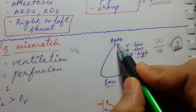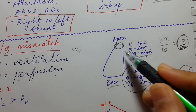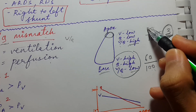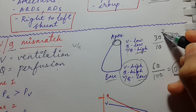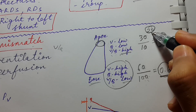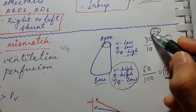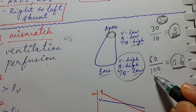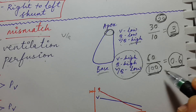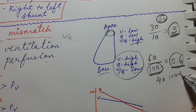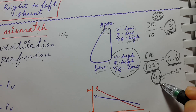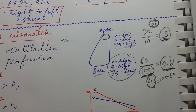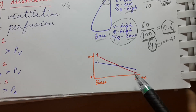Because the VQ ratio is higher at the apex, Mycobacterium tuberculosis likes to grow there. At the apex, with perfusion of 10 and ventilation of 30, the extra 20 units of ventilation is wasted — it doesn't take part in gas exchange. Similarly, at the base, the extra 40 units of perfusion is wasted, since perfusion far exceeds ventilation.